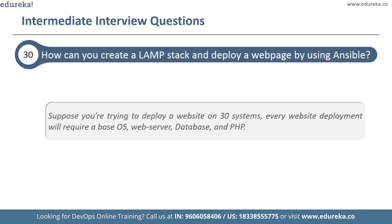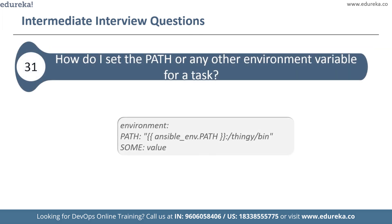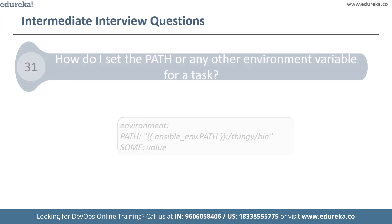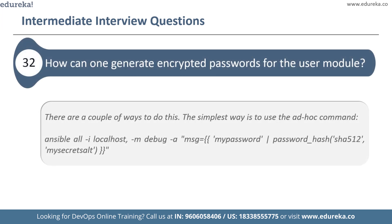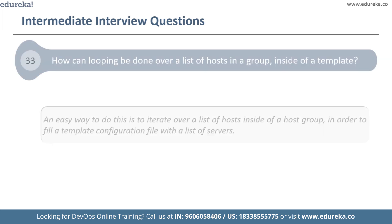To run the playbook, use the command: ansible-playbook lamp.yml -K. The next question is: how do I set the PATH or any other environment variable for a particular task? Environment variables can be set using the environment keyword, either for a specific task or an entire playbook, using a snippet specifying the keyword environment along with the PATH and its value. The next question is: how can one generate encrypted passwords for the user module? The simplest way is using an ad hoc command as shown on screen. Another way is using the mkpassword functionality on Linux. On macOS, generate passwords using Python after installing the passlib password hashing library, which allows generating sha512 password values.